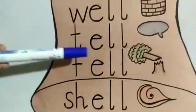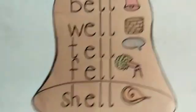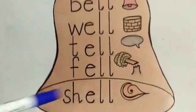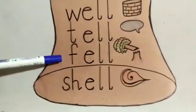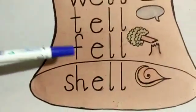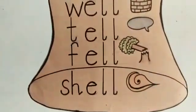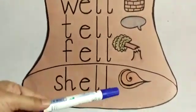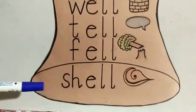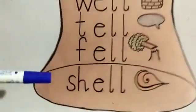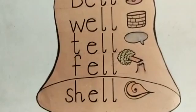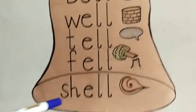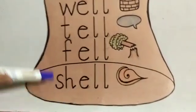Next one: Ta-el: tell. Fa-el: fell. Number three is fell, and the starting letter is F. Fa-el: fell. And last one is shell. The starting letter of shell is S. Sha-el: shell.